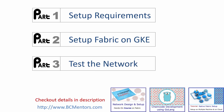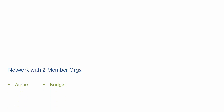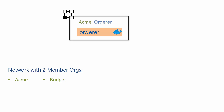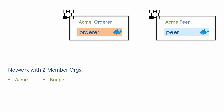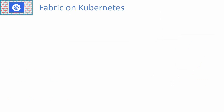Let's start with Part 1: the setup requirements. Our fabric network will have two member organizations: Acme and Budget. The Acme organization will host an orderer of type Solo and will also host one anchor peer. The Budget organization will host just one peer. There will be one application channel, and both the Acme peer and the Budget peer will join this channel to transact using chain codes.